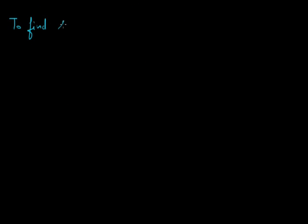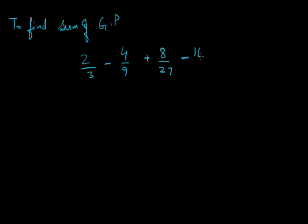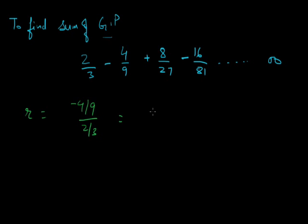Let's do another problem: find the sum of the GP: 2/3 − 4/9 + 8/27 − 16/81 and so on up to infinity. First, let's calculate the common ratio. The common ratio is the second term divided by the first term: (−4/9) ÷ (2/3) = −2/3. Since the absolute value is less than 1, we can calculate the sum to infinity.